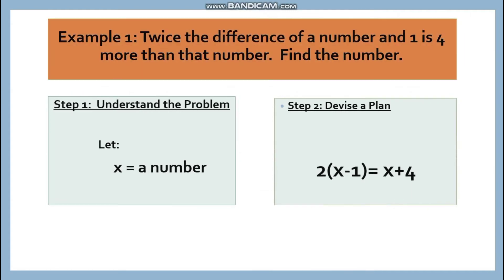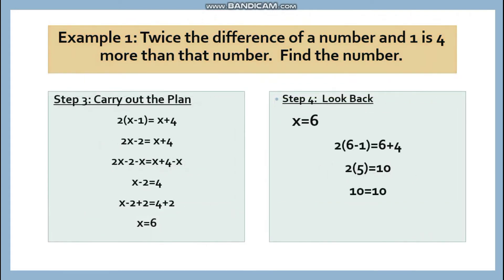Step three is carry out the plan or solve. We have two times the quantity of X minus one is X plus four. Using the distributive property, 2X minus 2 is X plus 4. We have 2X minus 2 minus X is X plus 4 minus X. You might be wondering why we have minus X on both sides. Recall additive property of equality. We have 2X minus X. We have X minus 2 is equal to 4.